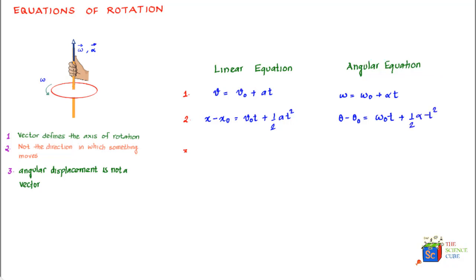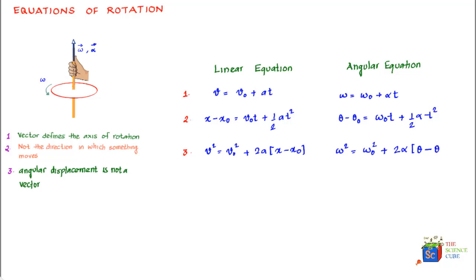The third linear equation is: final velocity squared equals initial velocity squared plus two times acceleration multiplied by the final position minus the initial position of the particle. The equivalent equation for rotation is: final angular velocity squared equals initial angular velocity squared plus two times angular acceleration multiplied by the final angular position minus the initial angular position.